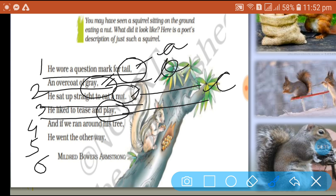Coming to the next line: 'And if we ran around his tree, he went to the other way.' 'Tree,' 'he went to the other way,' 'tree.' There is no similar in tone. 'Tree,' no similarity from the lines above: 'tail,' 'grey,' 'nut,' 'play,' 'tree.' We will have to give it a different